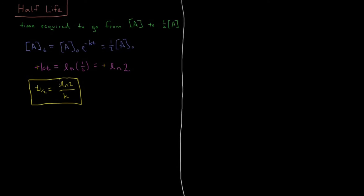The concept of half-life is particularly useful for first-order reactions because the half-life is independent of initial concentration. So if your half-life is 10 minutes, then in 10 minutes you'll have half as much of your initial concentration, in another 10 minutes you'll have a quarter as much, and in another 10 minutes you'll have an eighth as much. Every 10 minutes the concentration is decreasing by half, and it doesn't matter what the concentration is that you start with.